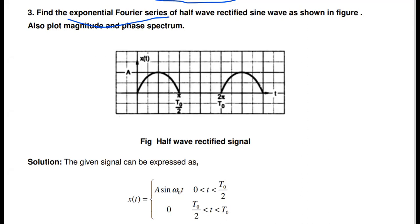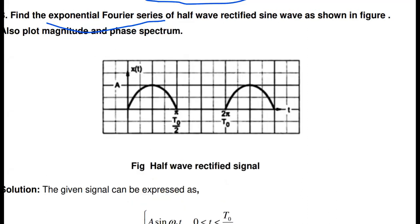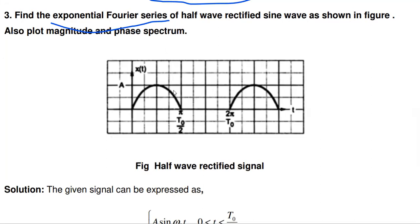This is the given half wave rectified signal. In this half wave rectified signal, during the positive half cycle of the input signal, the output is available. During the negative half cycle of the AC input signal, the diode is not conducting, so we get zero value. Only positive cycles will come; during the negative cycle, zero value will come. This is the half wave rectified signal.